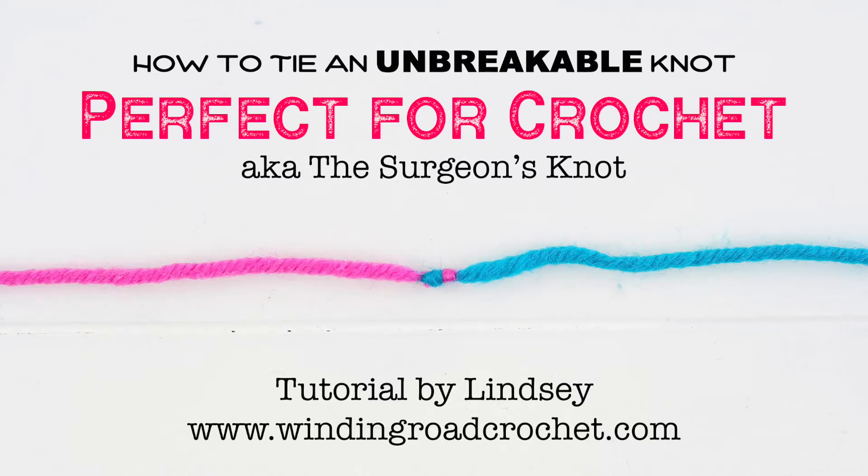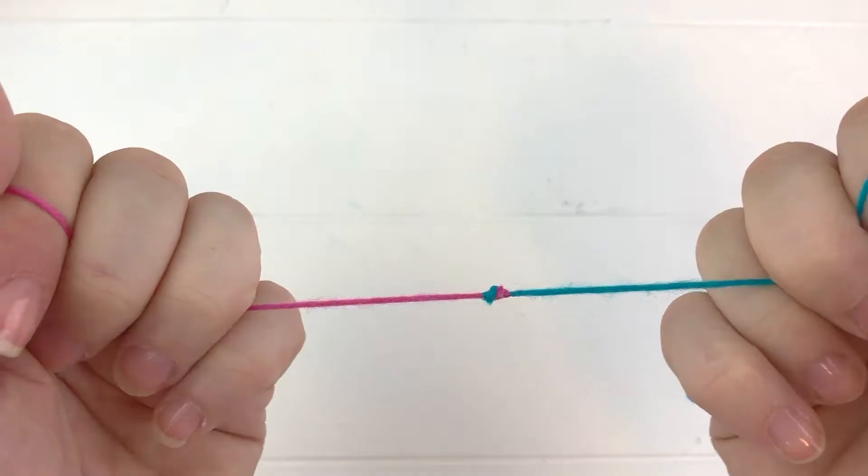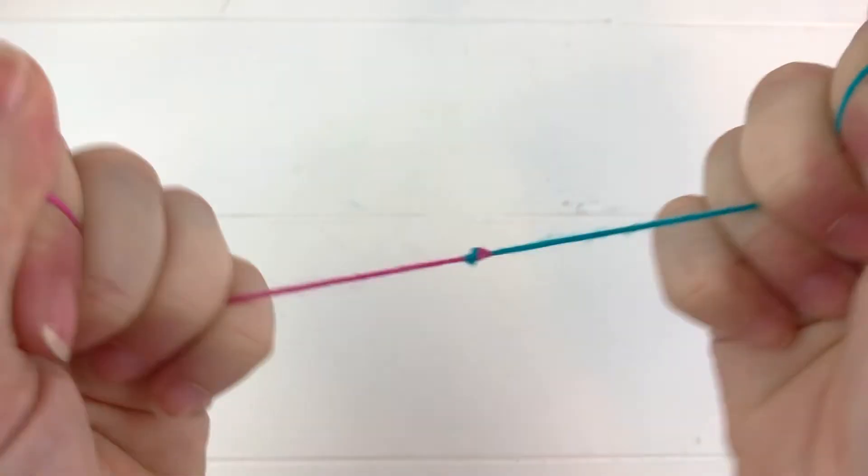Hi everybody, this is Lindsay from windingroadcrochet.com. Today I'm going to show you how to make an unbreakable knot to join two pieces of yarn for crochet. This is actually called the surgeon's knot, and it was shown to me by a friend named April from the Our Crochet Journey Facebook group.